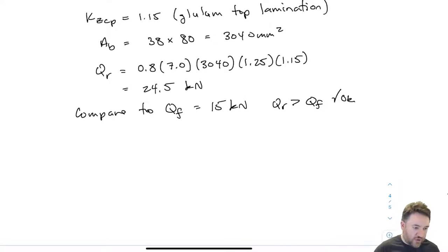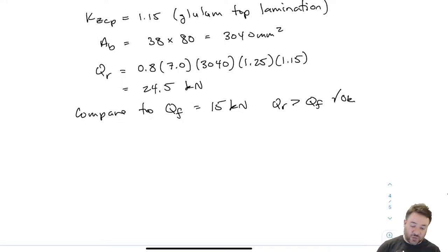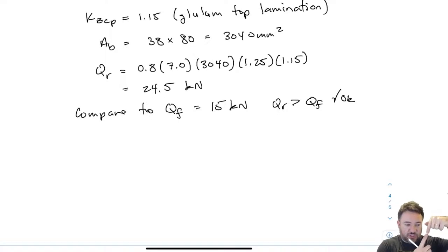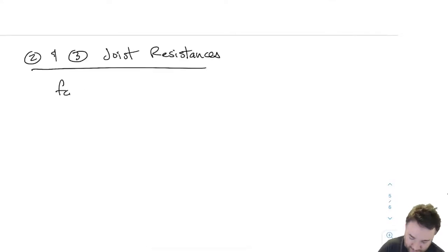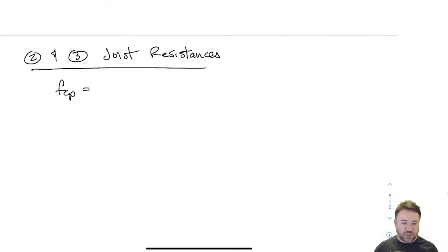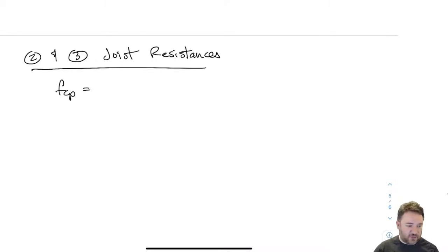Now we have to check the joists, because as the joist pushes on the beam, the beam pushes back on the joist. So the joist also has a compression perpendicular bearing resistance to check. To find the joist strength for compression perpendicular, I go to the appropriate table — it may differ from the glulam beam strength.